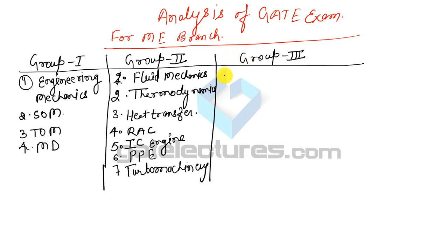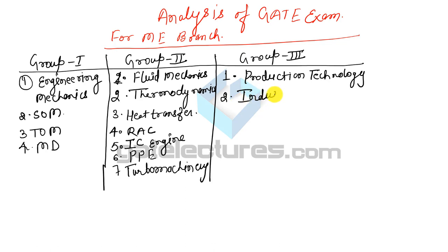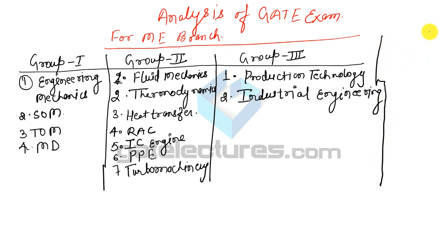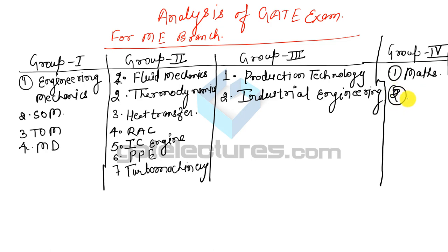In Group 3, the first subject is Production Engineering (Production Technology), and the second is Industrial Engineering. There is also a Group 4, which contains Engineering Mathematics as the first subject and Aptitude as the second subject.